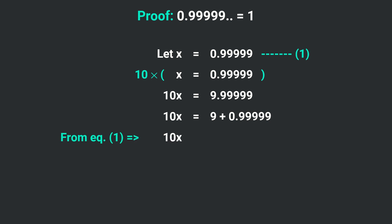In that equation we had assumed x to be equal to 0.99999, so now we are replacing that. Taking x to the left with 10x, so 10x minus x is equals to 9.